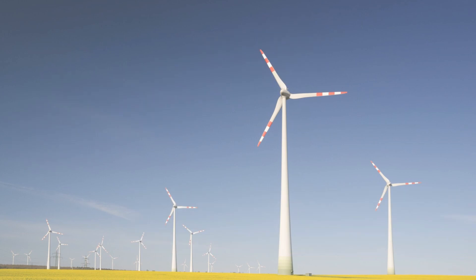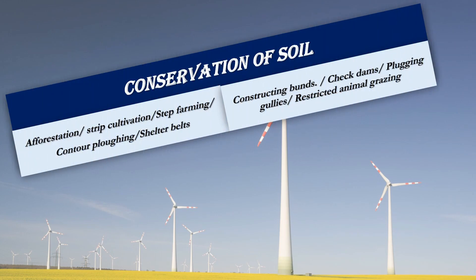Methods for soil conservation include: contour ploughing, where ploughing along contour lines decelerates the flow of water down slopes; terrace cultivation, which restricts erosion and is practiced in the western and central Himalayas; strip cropping, where strips of grass are left to grow between crops to break up the force of wind; and planting lines of trees called shelter belts, which help stabilize sand dunes and stabilize deserts in western India.